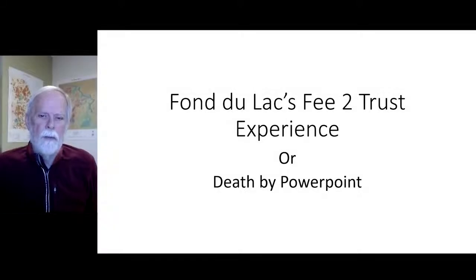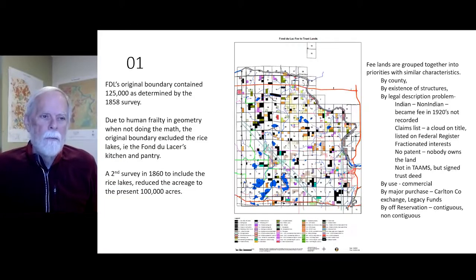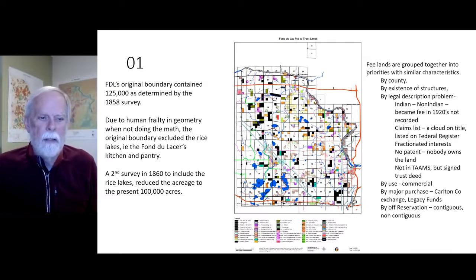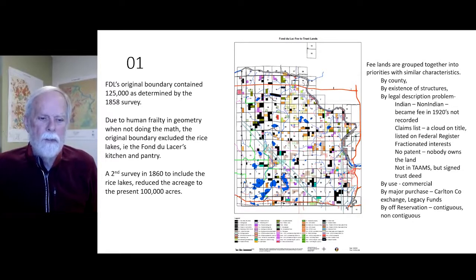Welcome to Fond du Lac's fee-to-trust experience, or death by PowerPoint. Fond du Lac's original boundary contained 125,000 acres as determined by the 1858 survey. Due to human frailty and geometry when not doing the math, the original boundary excluded the rice lakes — Fond du Lac's kitchen and pantry. The second survey done in 1860 to include the rice lakes reduced the acreage to the present 100,000 acres.